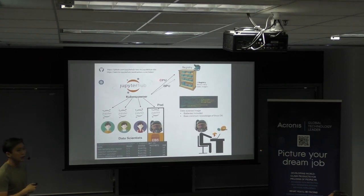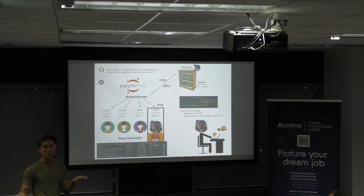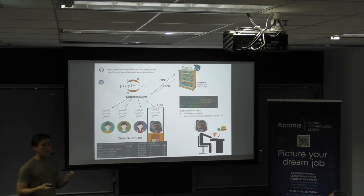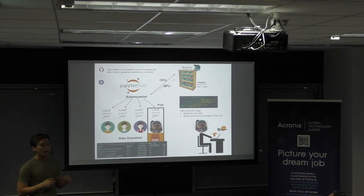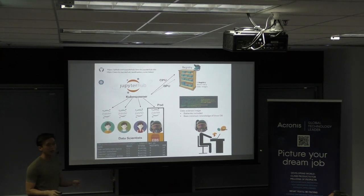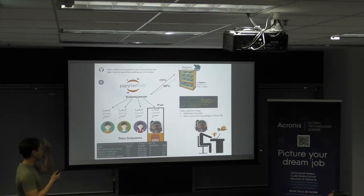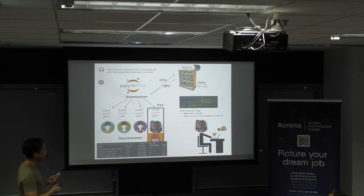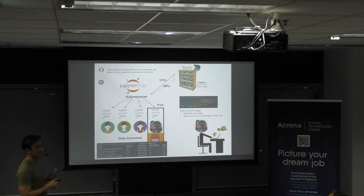There's something called a KubeSpawner, so you can actually specify the image. We have two teams in data science — an e-commerce team and a logistics team — and the types of software they use are very different. We can have a base image for data science, but the logistics team will be using something entirely different, maybe something like CPLEX. You can store these images in a registry, pull them, and spin up the container. The good thing is this lets you customize your data science image.